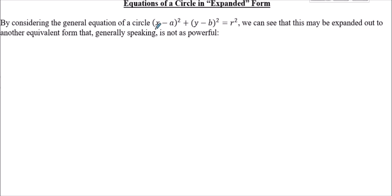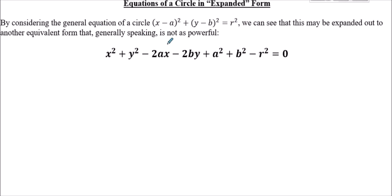We're now going to think about the equation of a circle in expanded form. This is another form you might see, and it looks completely different, but the good news is it's easy to turn into the more useful form. The general form we've seen is (x - a)² + (y - b)² = r² in factorised brackets. If you expand it out, another form might look like x² + y² with various x's, y's, and constants — which can look more confusing.